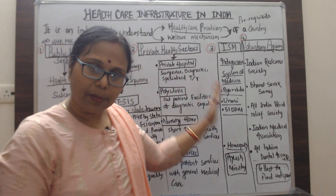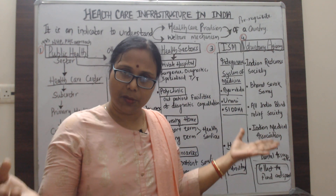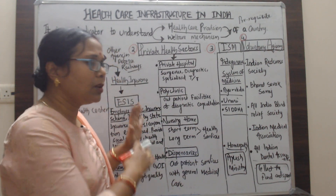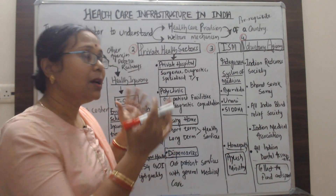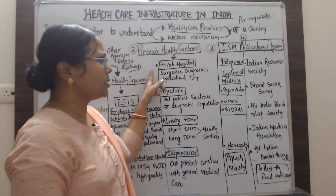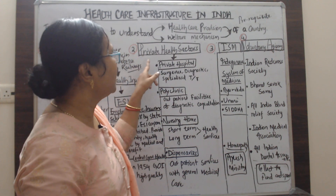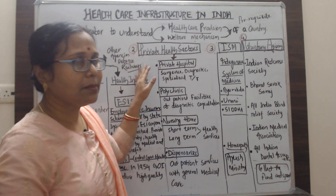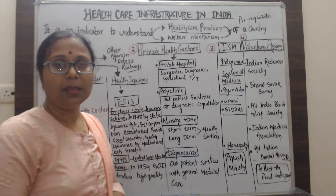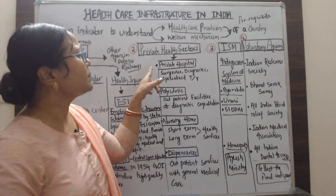As India has the largest population, the public health sector alone cannot provide all health services, so people depend on the private sector. In the private health sector, private hospitals, polyclinics, nursing homes, and dispensaries are all included.